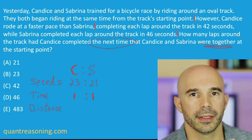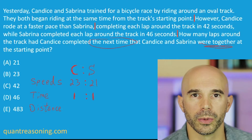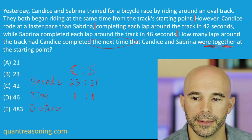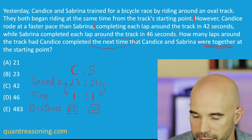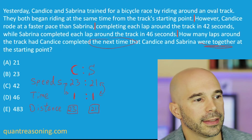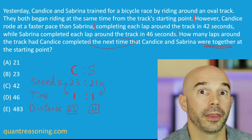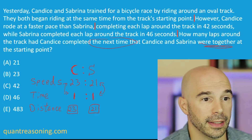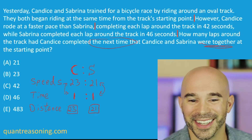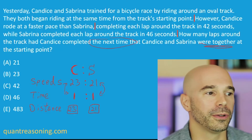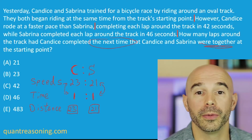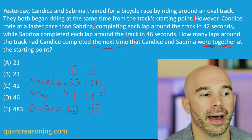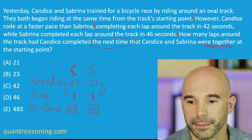So if the time is the same, and the speeds are a ratio of 23 to 21, what can we say about their distances? Here I would have 23 multiplied by 1 is 23, and 21 multiplied by 1 is 21, because it's a multiplicative story. Since Candice traveled 23/21ths as fast as Sabrina, and they traveled for the same amount of time, therefore Candice traveled 23/21ths as far — 23/21ths as many laps as Sabrina did, because the time was the same.